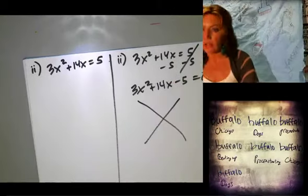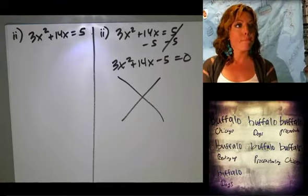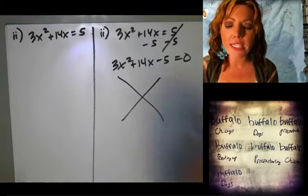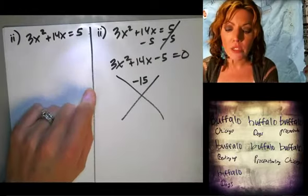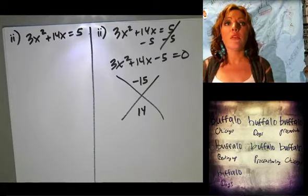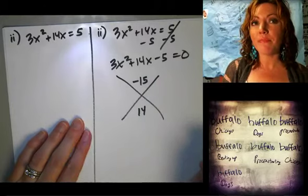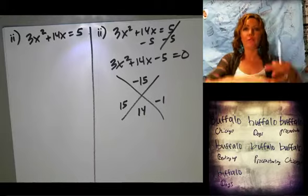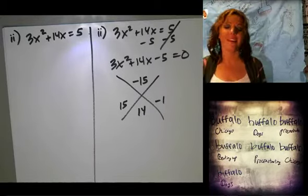Then what? So what goes in the top? Negative 5. Is it negative 5 or negative 15? Negative 15. Why is it negative 15 instead of negative 5? The 3. 3 times negative 5. Bottom? 14. Okay, two numbers that multiply to negative 15 that add up to positive 14. Stacy? 15 and negative 1. All right. Cool.